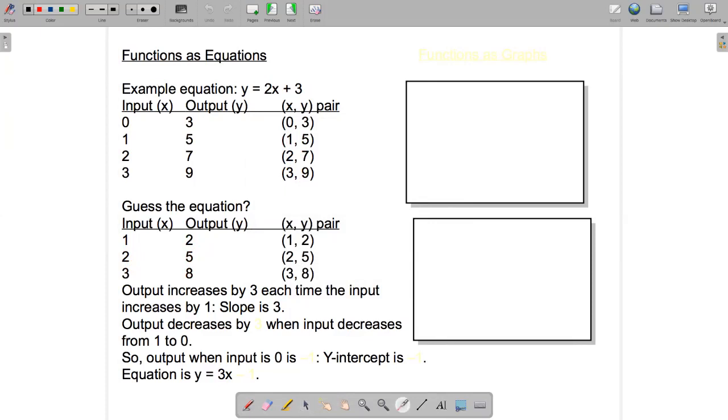How about the other number in the equation? What does that represent? Well, if I look at the input of 0, that had an output of 3, and that's what this number is. It's the output when the input is 0.